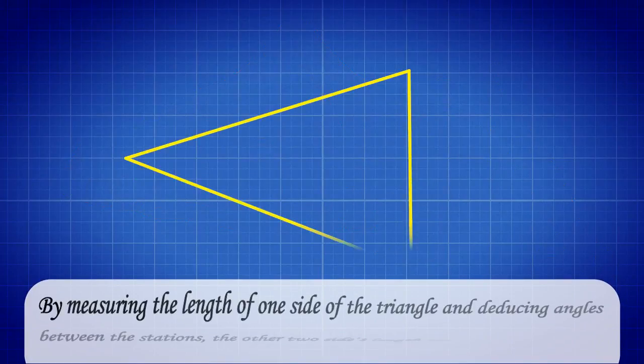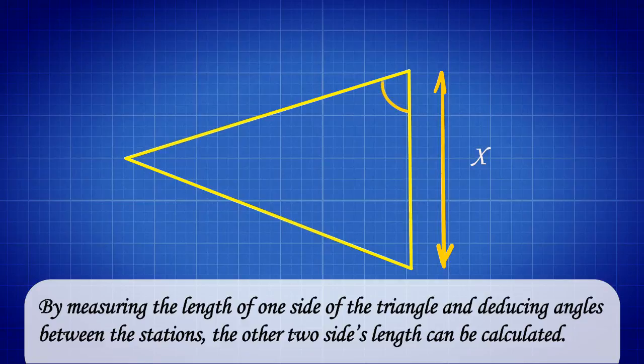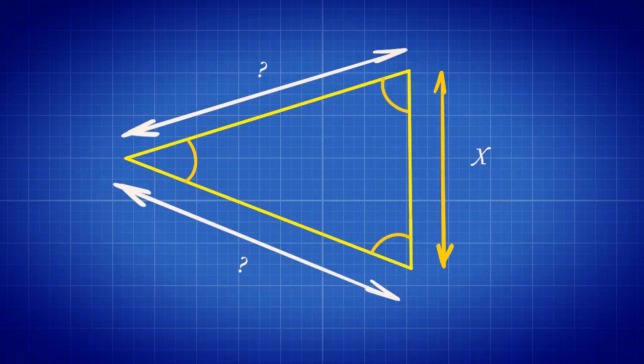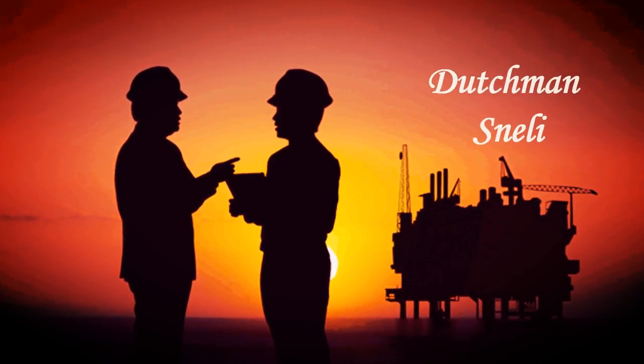By measuring the length of one side of the triangle and deducing angles between the stations, the other two side's lengths can be calculated. This was first framed by a Dutchman named Snellius.